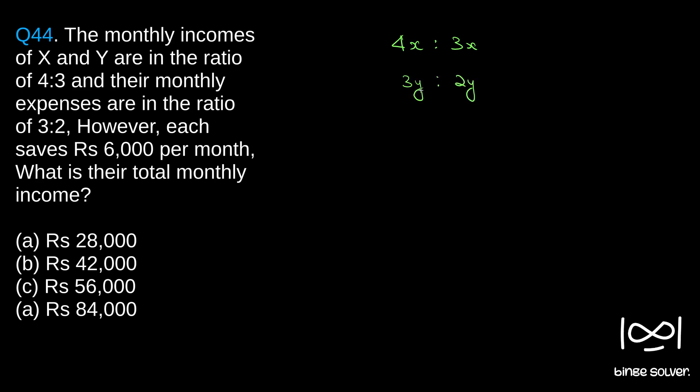So their expenses are 3y and 2y. It is given each saves rupees 6,000 per month. 4x minus 3y—4x is his first person's income, 3y is his expense—gives income minus expense equals savings, that is 6,000. Similarly, it is given 3x minus 2y equals 6,000.